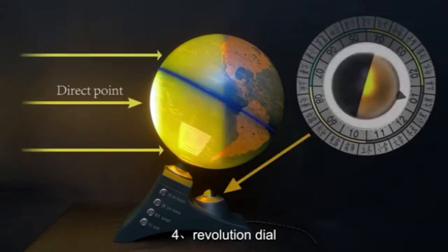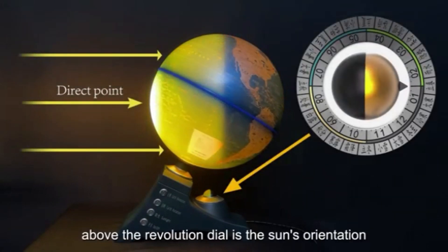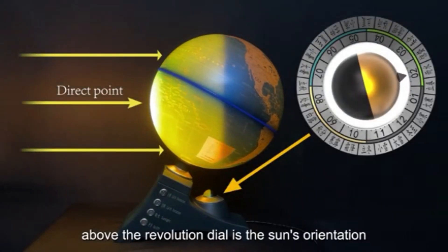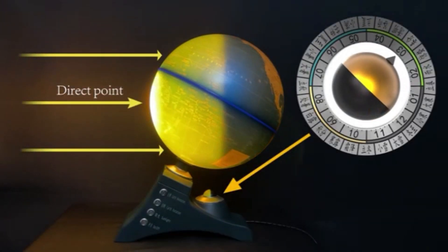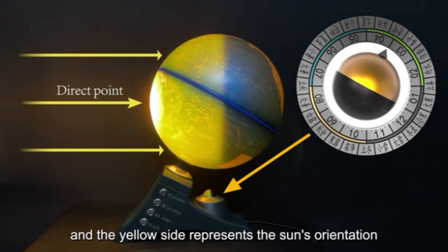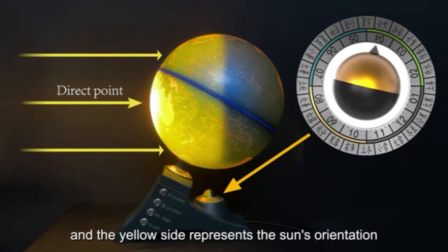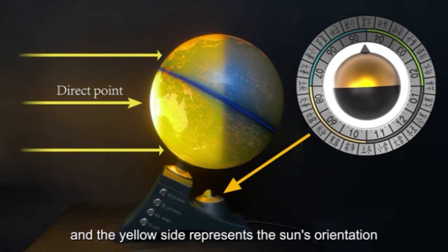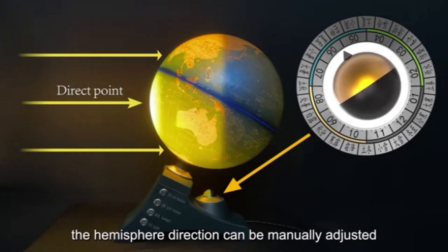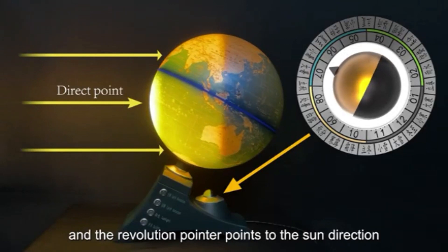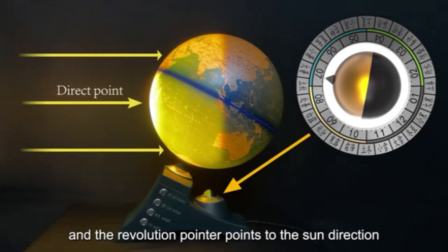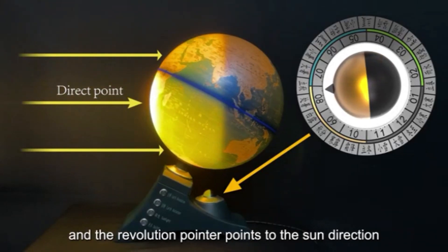Above the revolution dial is the Sun's orientation hemisphere, and the yellow side represents the Sun's orientation. The hemisphere direction can be manually adjusted, and the revolution pointer points to the Sun's direction.